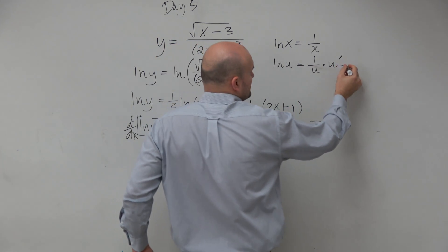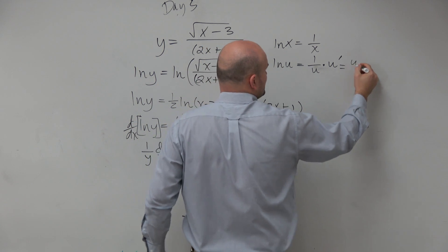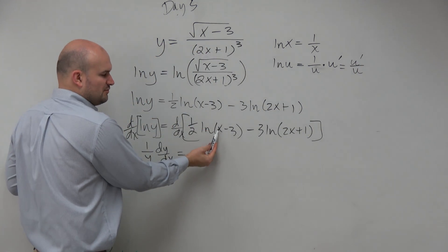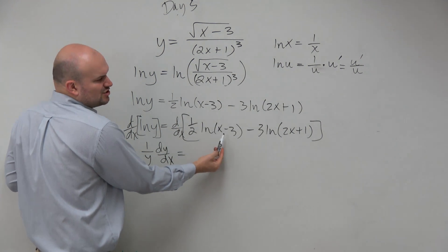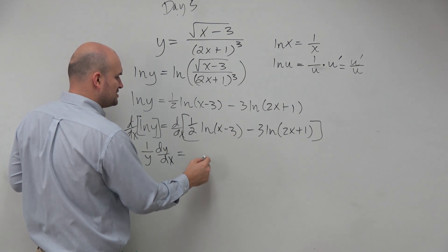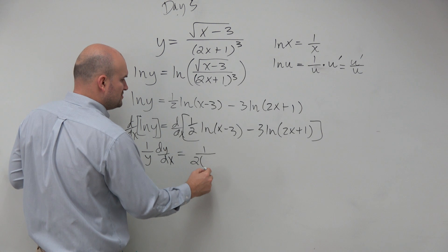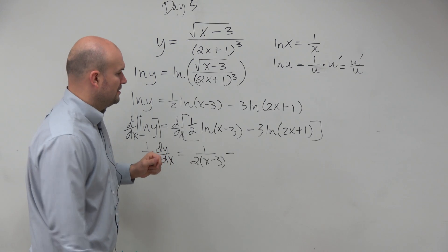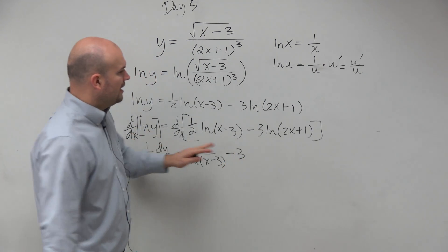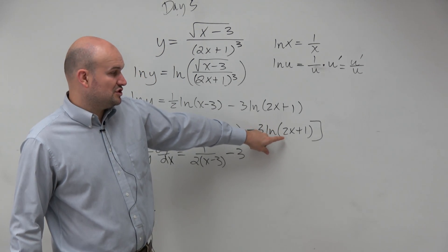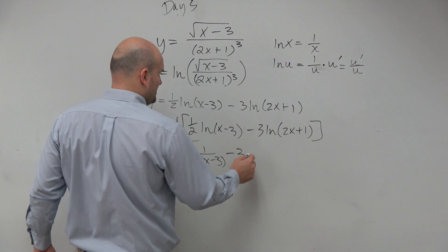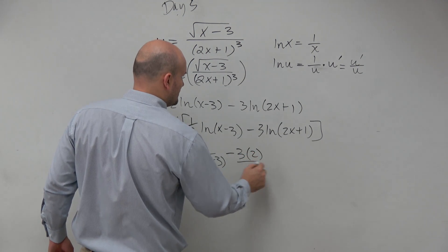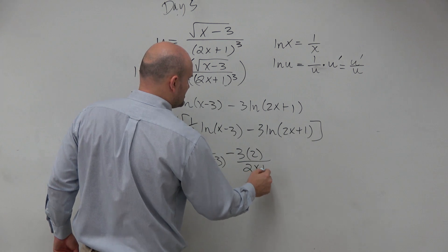But a lot of times when we're dealing with it in one form, we can just write it as u prime over u. So over here, I notice that the derivative of my inside function u is just 1. So therefore, I know my numerator is going to be 1 over 2 times (x-3) minus 3. And then here, the derivative of my inside function is 2. So that's going to be 3 times 2 all over 2x plus 1.